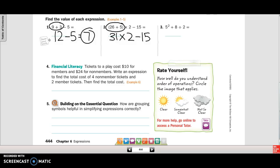Then if I go through, please excuse my dear, we have multiplication. So 31 times 2 is 62, and then 62 minus 15 is 47.